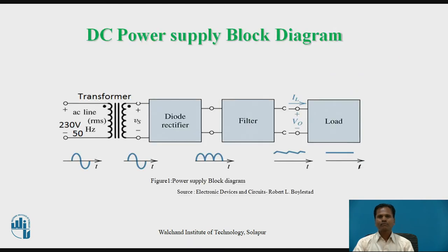This is a block diagram for a typical DC power supply. It consists of a transformer, diode rectifier circuit, filter circuit, and load resistance. A transformer may be a simple transformer or a transformer with center tap secondary. The transformer provides the required AC voltage at the input of the rectifier circuit. The rectifier circuit converts the AC voltage signal to DC, and the filter circuit filters out unwanted components and provides ripple-free DC voltage to the load.